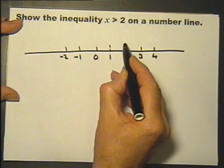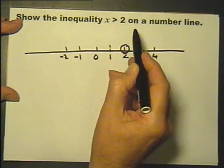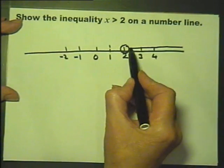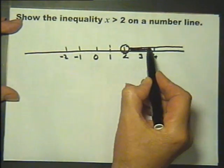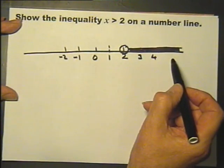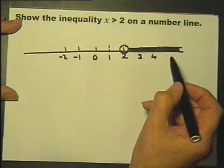Put a circle on the number, and it says greater than, so we just make that look a bit thicker like that. That is showing the inequality x is greater than 2 on the number line.